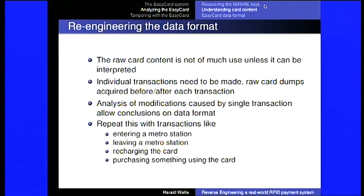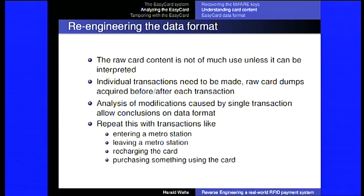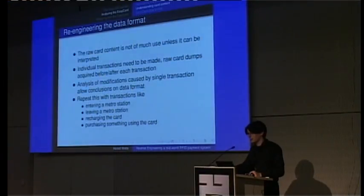Now we need to understand how the data is organized on the card. The logical approach is to perform individual transactions: go into the subway, read the card before and after, then compare what has changed. Do that again — leave the subway station and look at what changed. Make a purchase, recharge the card, take a bus, rent a bicycle, and each time capture a new card dump to see what's happening.